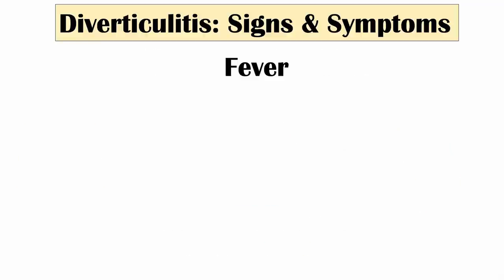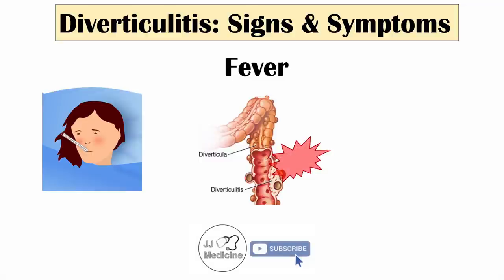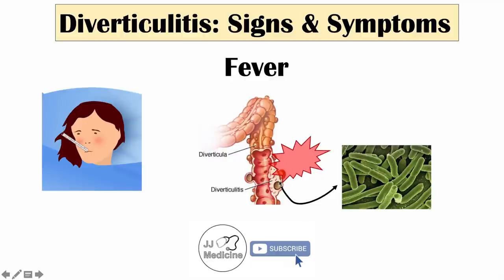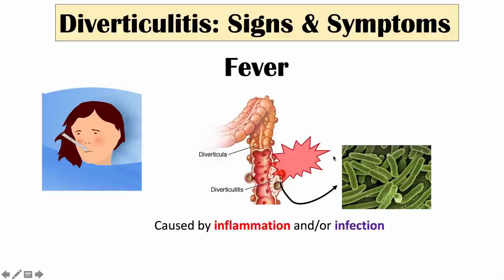Because diverticulitis is inflammation of diverticula, we can see fever. Fever is caused by the inflammation itself. We can also see microperforations or even larger perforations from the diverticula — the walls are a bit weak, and if it becomes so inflamed and enlarged, these little diverticula can actually break. A little hole can form and feces and bacteria can escape into the surrounding area, leading to infection and fever as well. These are very severe cases that can lead to possible abscess or sepsis. So fever can occur due to inflammation and/or infection.